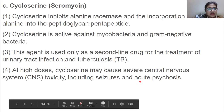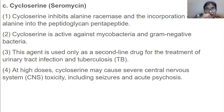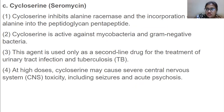Cycloserine inhibits alanine racemase and the incorporation of alanine into the peptidoglycan pentapeptide. It is active against mycobacteria and gram-negative bacteria and is used only as a second-line drug for the treatment of urinary tract infections and tuberculosis. At high doses, cycloserine may cause severe CNS toxicity including seizures and acute psychosis.